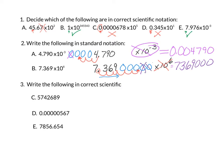For part 3, you are asked to write the answers in correct scientific notation. Pause the video while you work on letter C. To write it in correct scientific notation, we'll find out where the decimal currently is, then place it so that there is one number in front of the decimal place. We're going to go back 1, 2, 3, 4, 5, 6 places. So our answer will be 5.742689 times 10 to the power of 6.